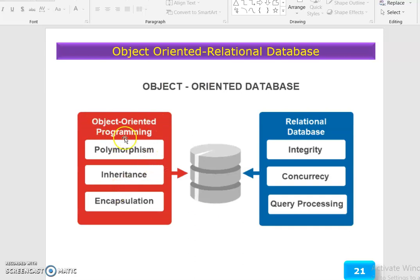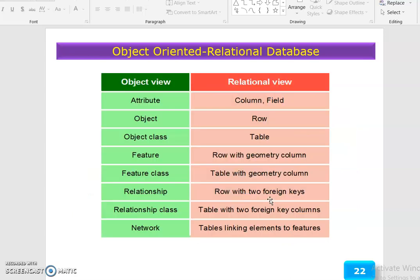Object-oriented database combines object-oriented programming polymorphism, encapsulation with relational database integrity, concurrency, and query processing in a database management system. The object view has a corresponding relational view.